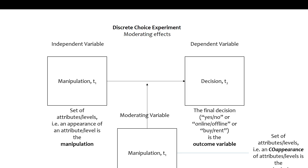With a discrete choice experiment you can test two types of relationships: direct effects, which is the typical use, but also moderating effects. If you attempt to measure moderating effects, your sample size should be larger, because you need all participants to go through different combinations of co-appearing attributes and levels. As a rule of thumb, the sample size should be 1.5 to 2 times higher than for direct effects alone — depending on how many decisions people make and how many moderating effects you want to test.